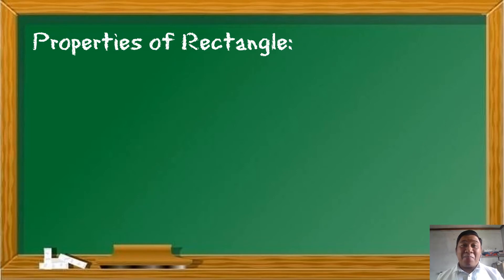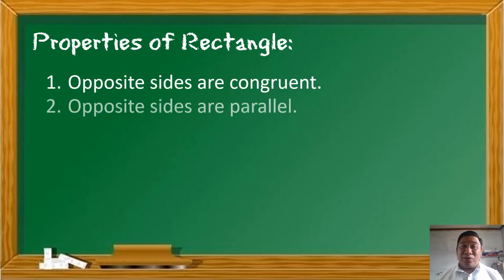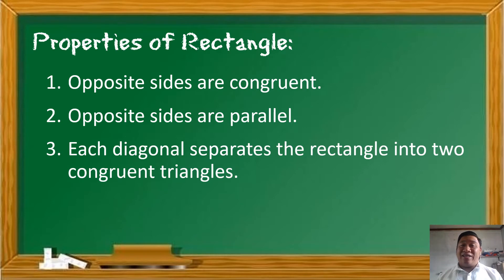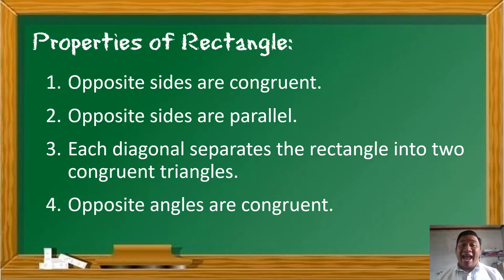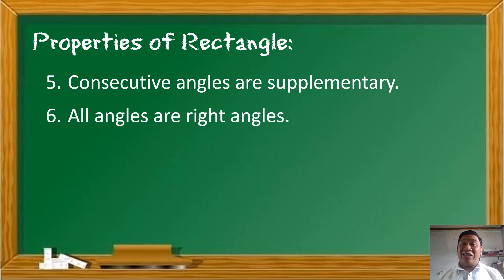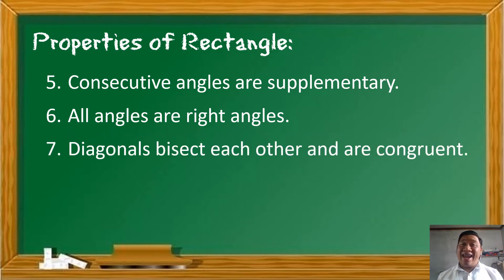Yung ibang mga properties dito ay galing mismo kay parallelogram because rectangle is a parallelogram, at yung iba naman ay galing mismo sa definition ni rectangle. Properties of a rectangle: (1) opposite sides are congruent; (2) opposite sides are parallel; (3) each diagonal separates the rectangle into two congruent triangles; (4) opposite angles are congruent; (5) consecutive angles are supplementary; (6) all angles are right angles; (7) diagonals bisect each other and are congruent.